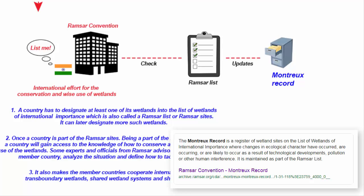The Montreux Record is a register of wetland sites where changes in ecological character have occurred, are occurring, or are likely to occur as a result of technological developments, pollution, or other human interference. It is maintained by the Ramsar Convention.